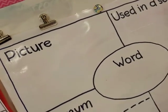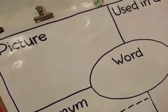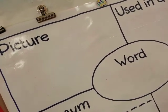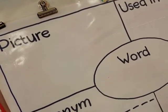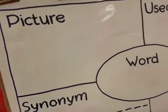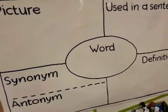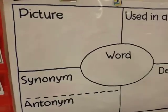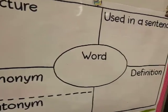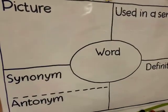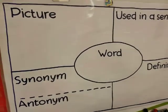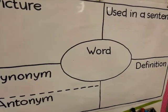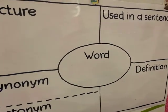This is my four square graphic organizer — we'll have a sheet with this and do a few words. This would be a good thing for Dewey to work on.